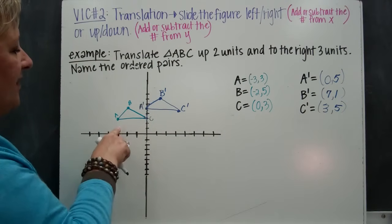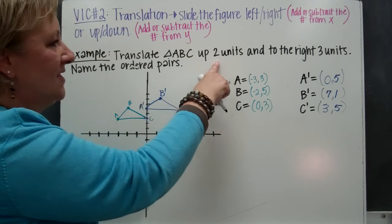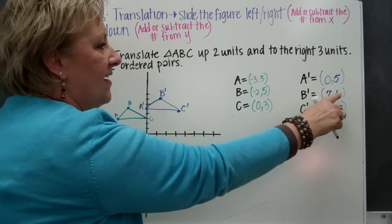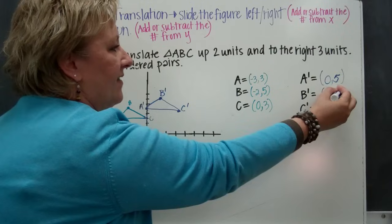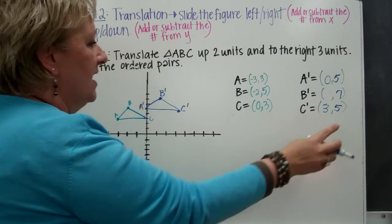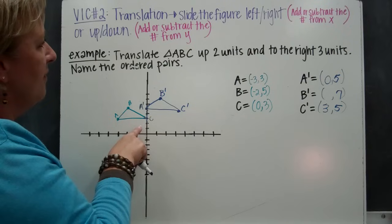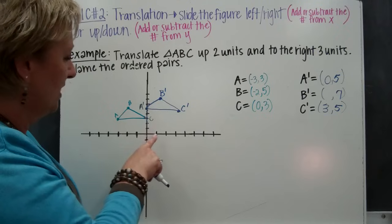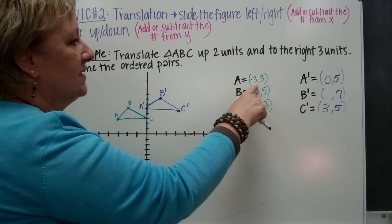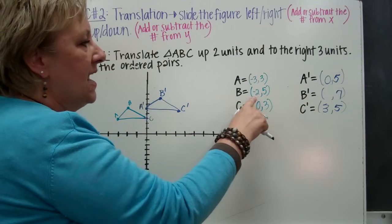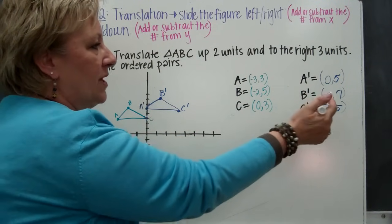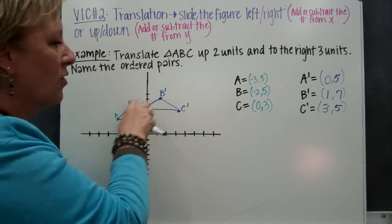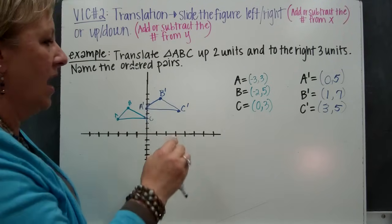If you notice, if I wanted to go up two, all I had to do was add two to each y value. Two plus three is five. Two plus five is seven. And if I wanted to go to the right three, I've got to add three to the x value. So negative three plus three gives me zero; negative two plus three gives me one; and zero plus three gives me three. I can either add it to my coordinates or do it on the graph.